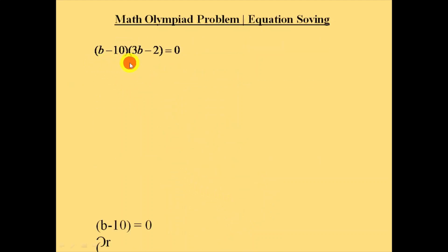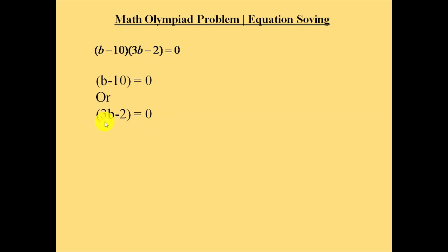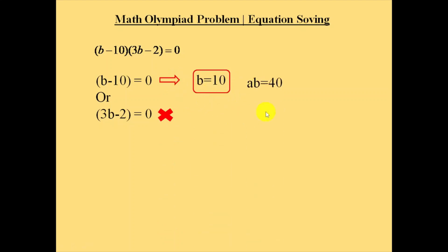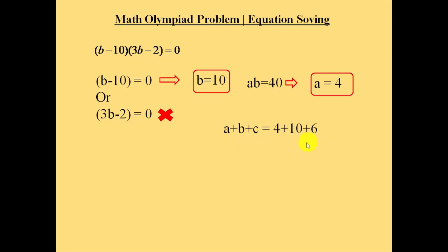There are two possibilities: b minus 10 equals 0, or 3b minus 2 equals 0. If 3b minus 2 equals 0, b equals 2 by 3, which is not a positive integer, so we ignore it. Taking b minus 10 equals 0, b equals 10. Substituting b equals 10 into a into b equals 40 gives a equals 4. So a equals 4, b equals 10, c equals 6, and therefore a plus b plus c equals 4 plus 10 plus 6, which equals 20. Thank you.